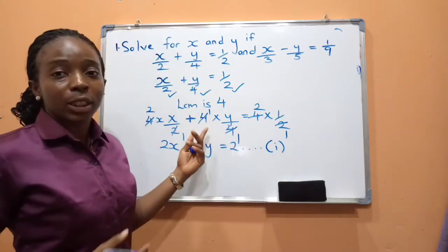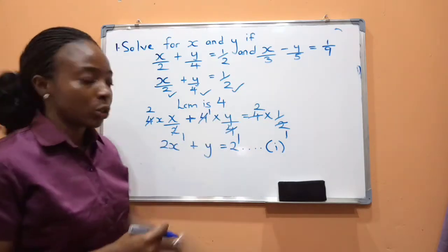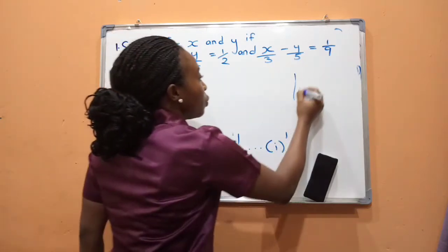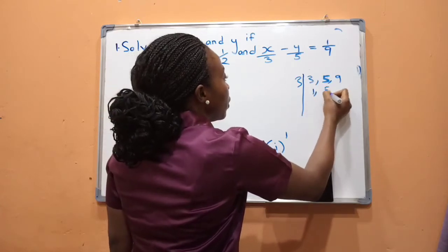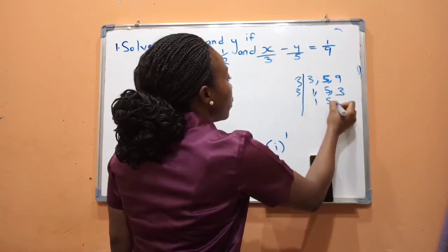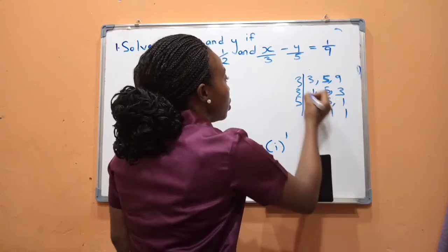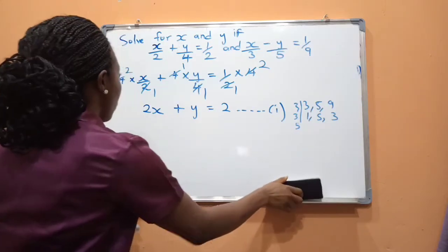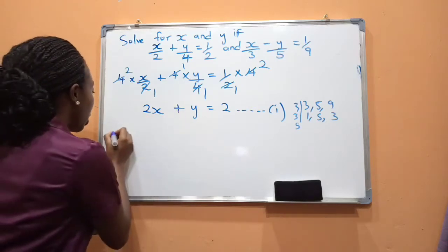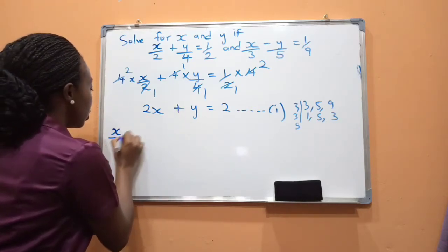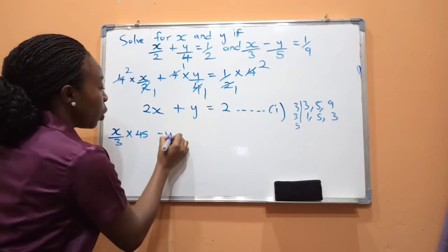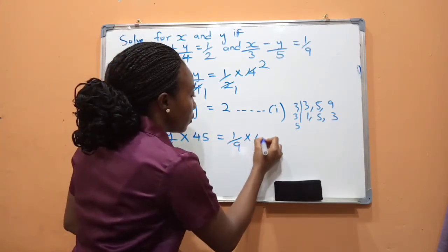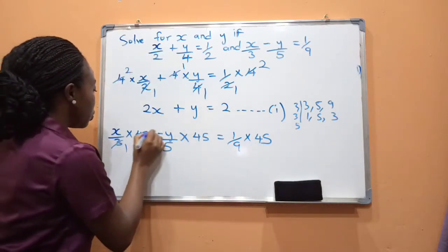This is equation 1. Now let's do the same for the second equation. We need the LCM of 3, 5, and 9. Working through the prime factorization: 3 × 3 = 9, 9 × 5 = 45. So the LCM is 45. We multiply each term: (x/3) × 45, minus (y/5) × 45, equals (1/9) × 45.